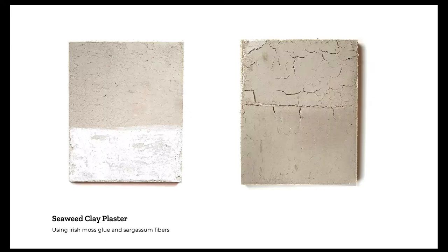The next application I developed is based on the precedent of the Japanese noritsuchi, which means glue plaster. Again, the seaweed here is used as a glue for the plaster — it increases the workability of the mix so you can use the plaster for a longer time, and it also makes the mix a bit spongy. Noritsuchi is based on using a Japanese red algae that comes from the same species as Irish moss.